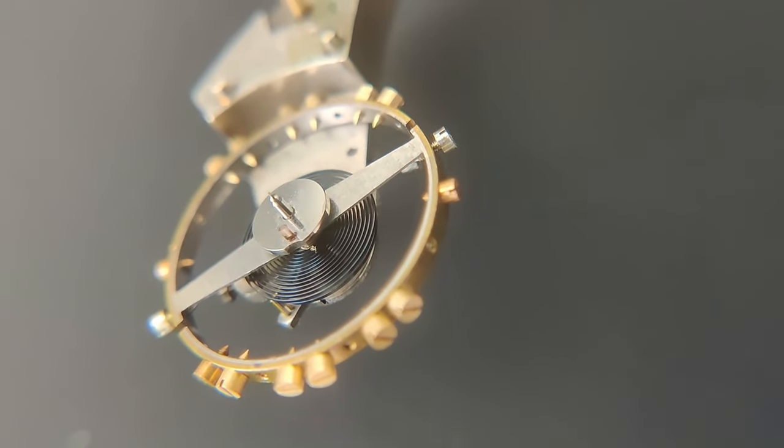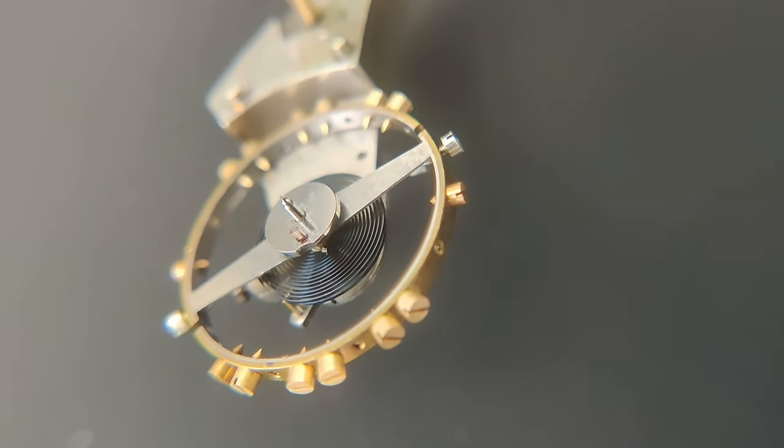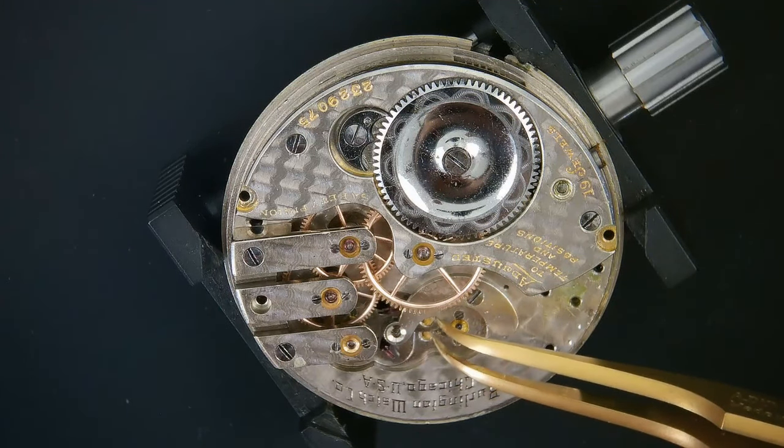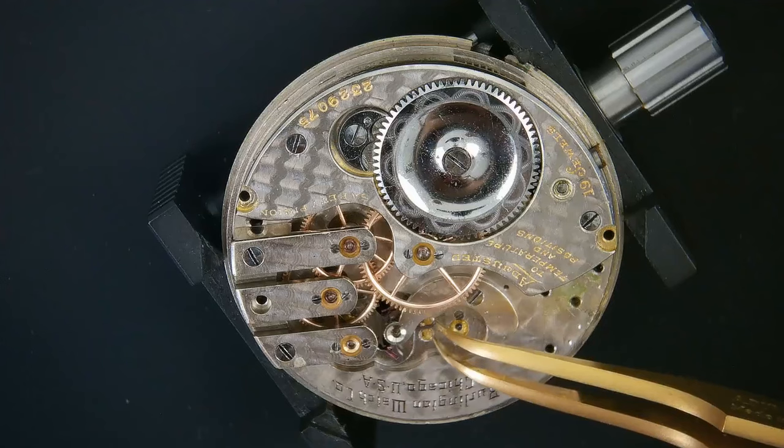Here we go, let's take a look. No, looks pretty good. This is interesting. As I'm moving the pallet fork, the escape wheel wants to move, but it's really sluggish.